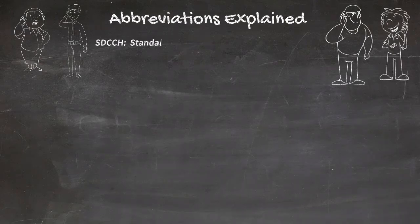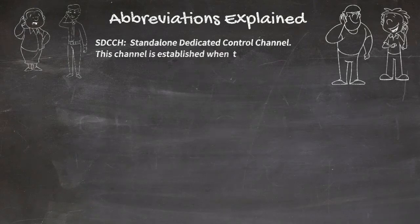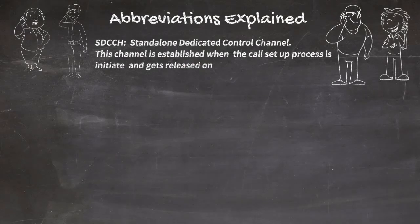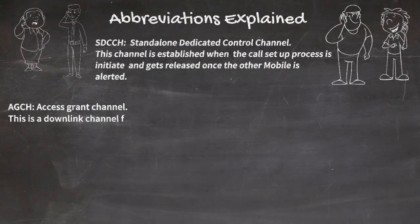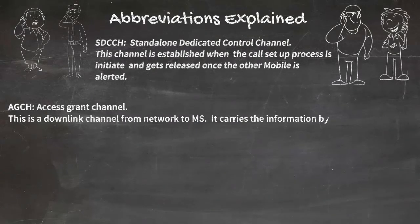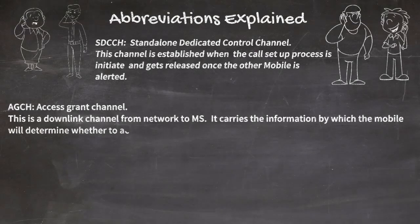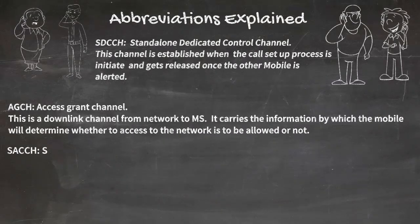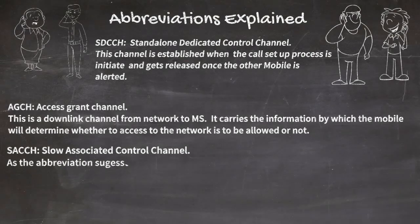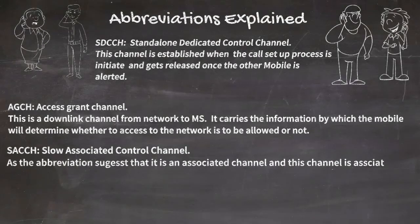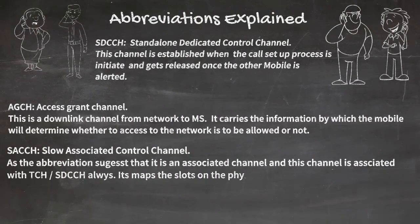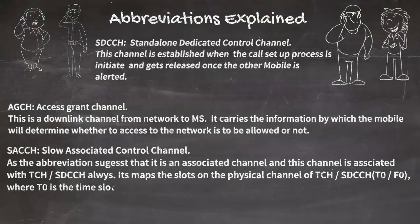SDCCH is the Standalone Dedicated Control Channel. This channel is established when the call setup process is initiated and gets released once the other mobile is alerted. AGCH is the Access Grant Channel — a downlink channel from the network to the MS that carries information by which the mobile determines whether access to the network is allowed or not. SACCH is the Slow Associated Control Channel, associated with TCH and SDCCH, and maps slots on the physical channel at T0 and F0.